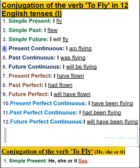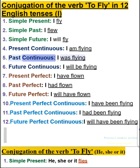4. Present continuous — I am flying. 5. Past continuous — I was flying. 6. Future continuous — I will be flying.